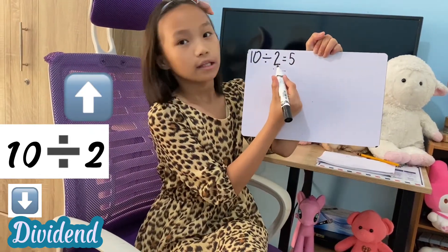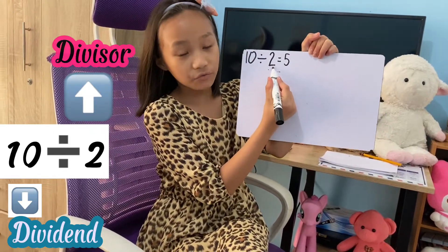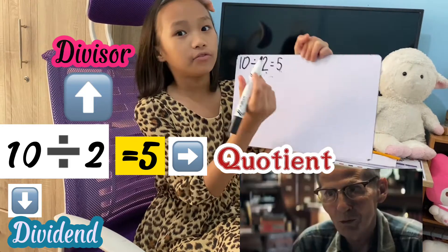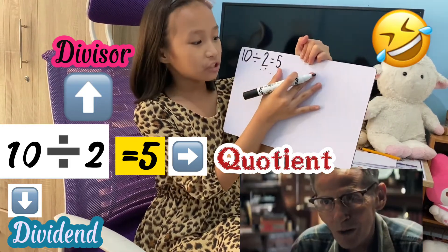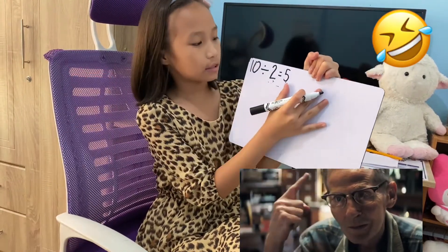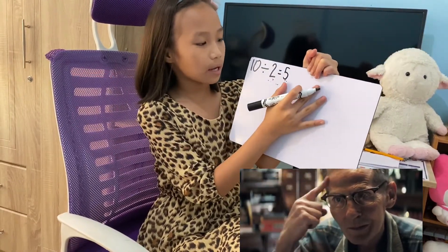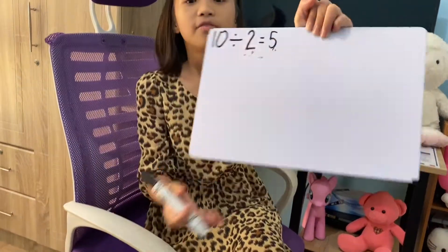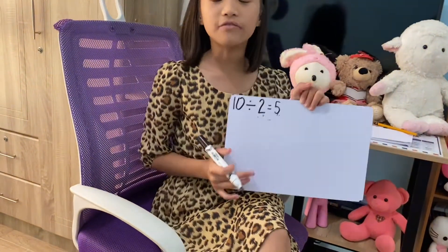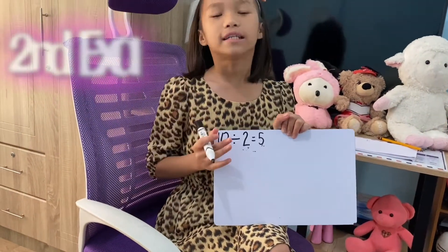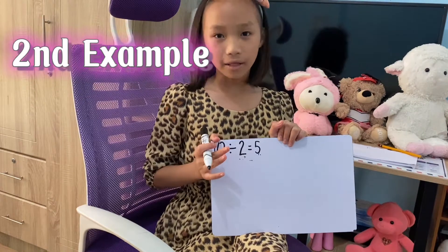By the way kids, this is the divisor, and this is the dividend, and this is the quotient. The answer here is the quotient. In 10 divided by 2, the quotient is 5. Now let's have our second example.